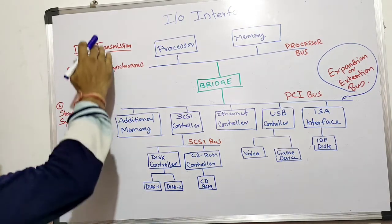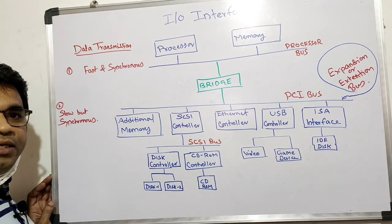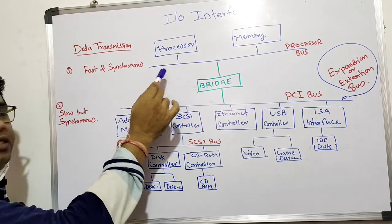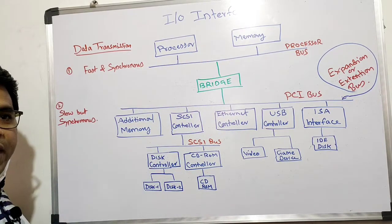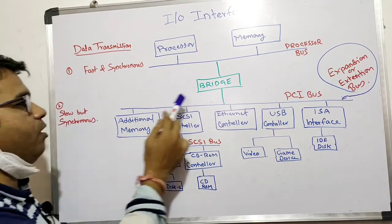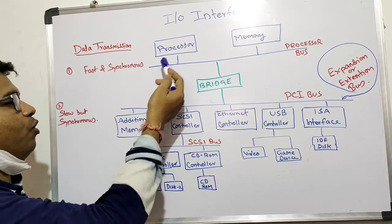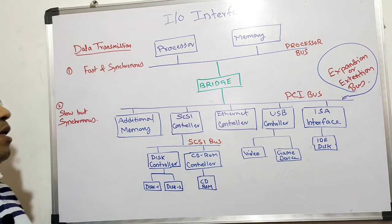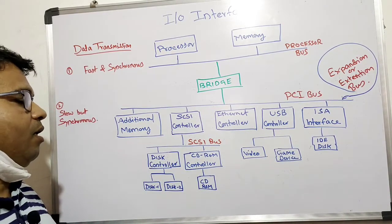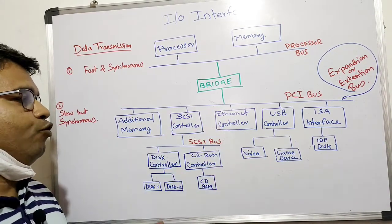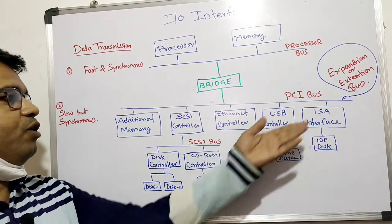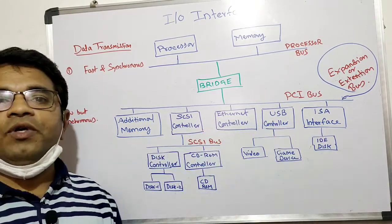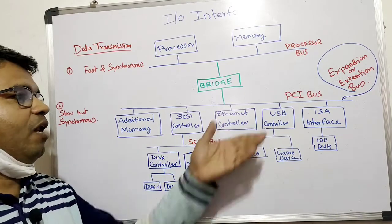From the point of view of data transmission speed, the processor bus is the fastest and it is synchronous — meaning data transmission is clock-signal based. The PCI bus is slower compared to the processor bus but is also synchronous. These are the various buses, how they connect to each other and communicate. When we want to connect any device, we use the expansion bus, which supports different controllers for different types of I/O devices.